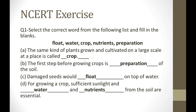The next part: the first step before growing a crop is preparation of soil. Third part: damaged seeds would float on the top of water. We have discussed two types of seeds — good or bad. Good seeds are heavy in weight and will sink in water. But bad seeds, known as damaged seeds, will be hollow from inside and will float on the surface of water.